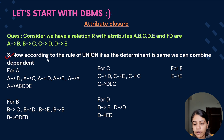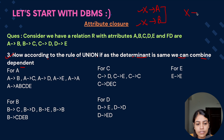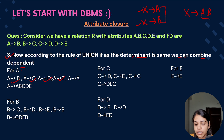Now the third step: according to the rule of union, if the determinant is the same, we can combine the dependents. So if x determines A and x determines B, we can write x determines AB. Using all functional dependencies found via reflexivity and transitivity — since A determines A, B, C, D, and E — A's union gives A determines ABCDE.